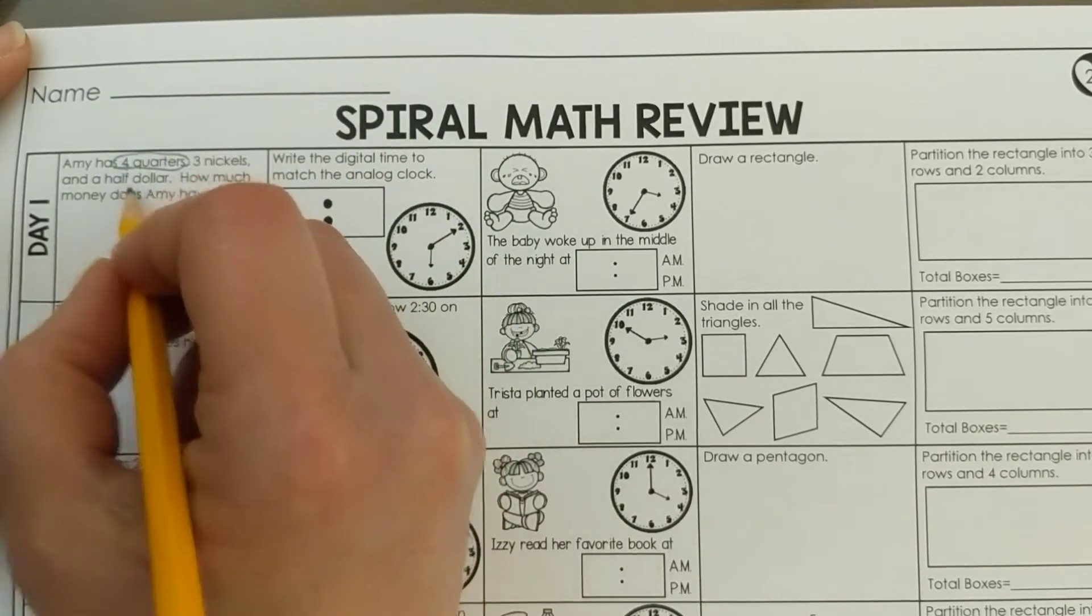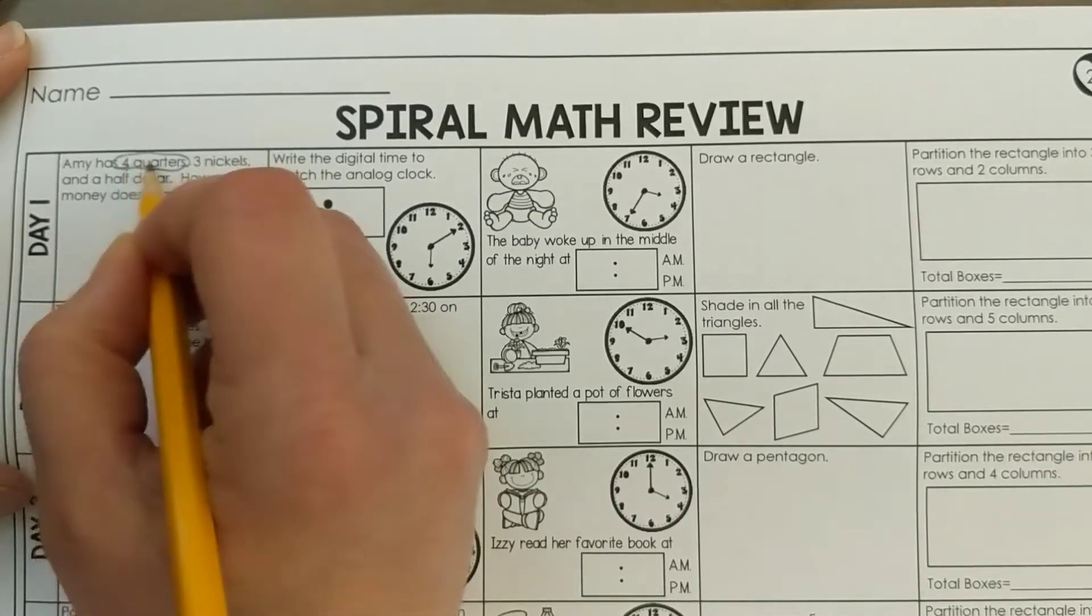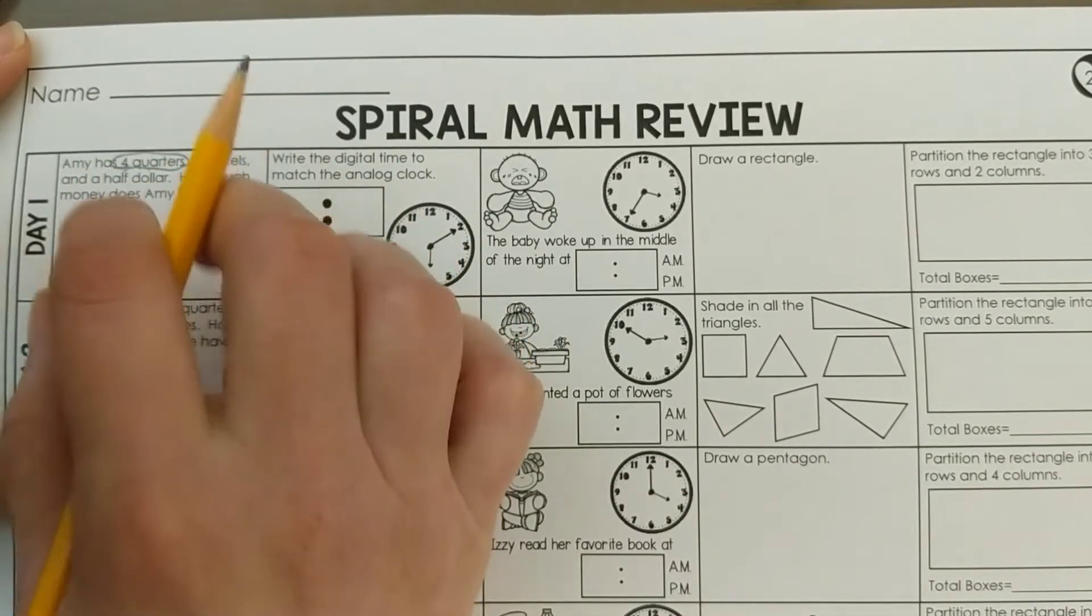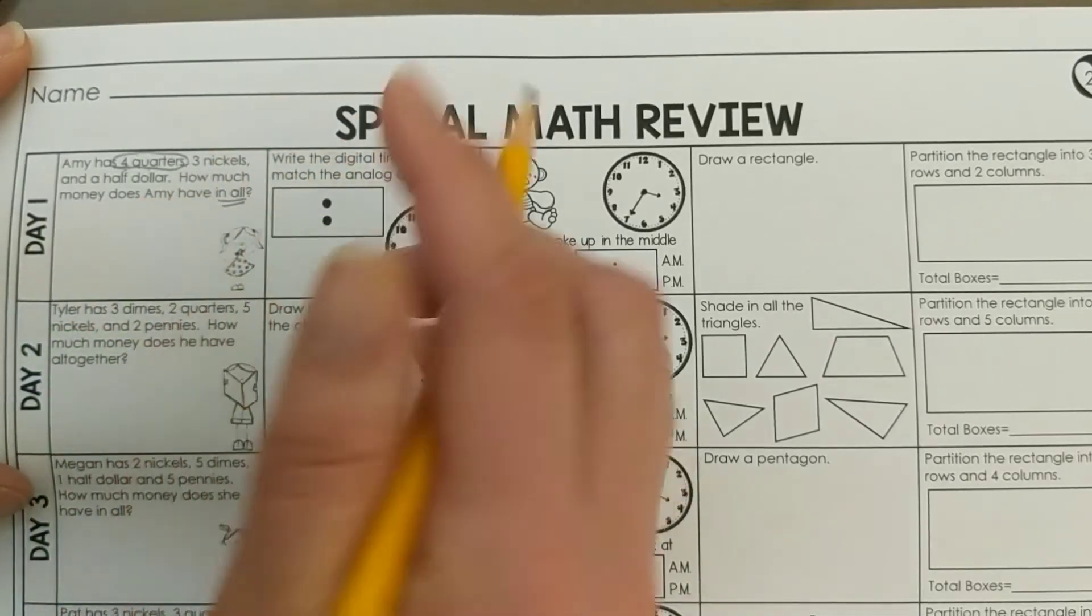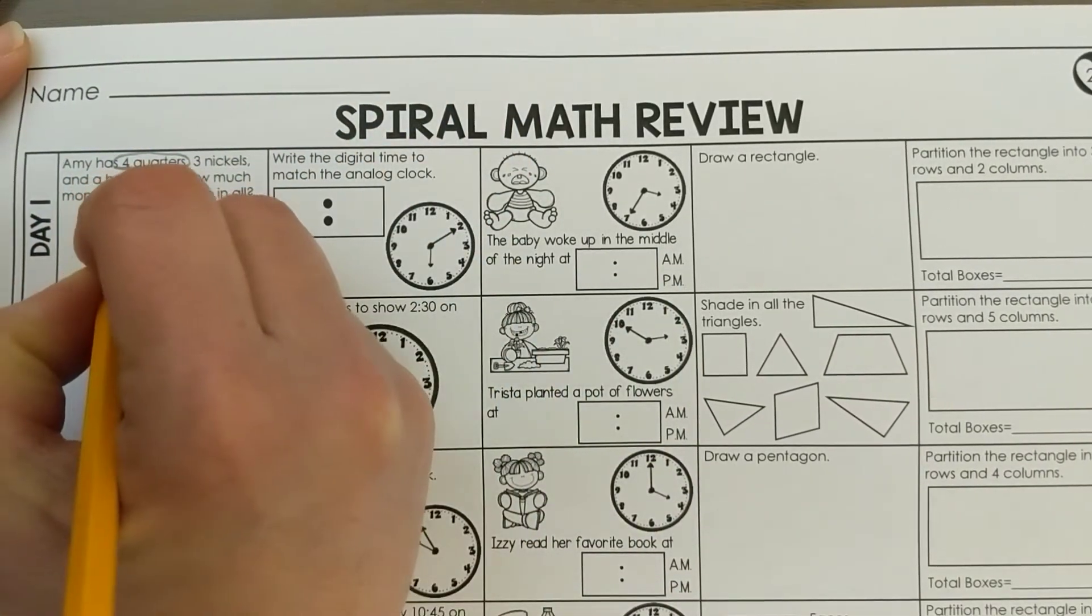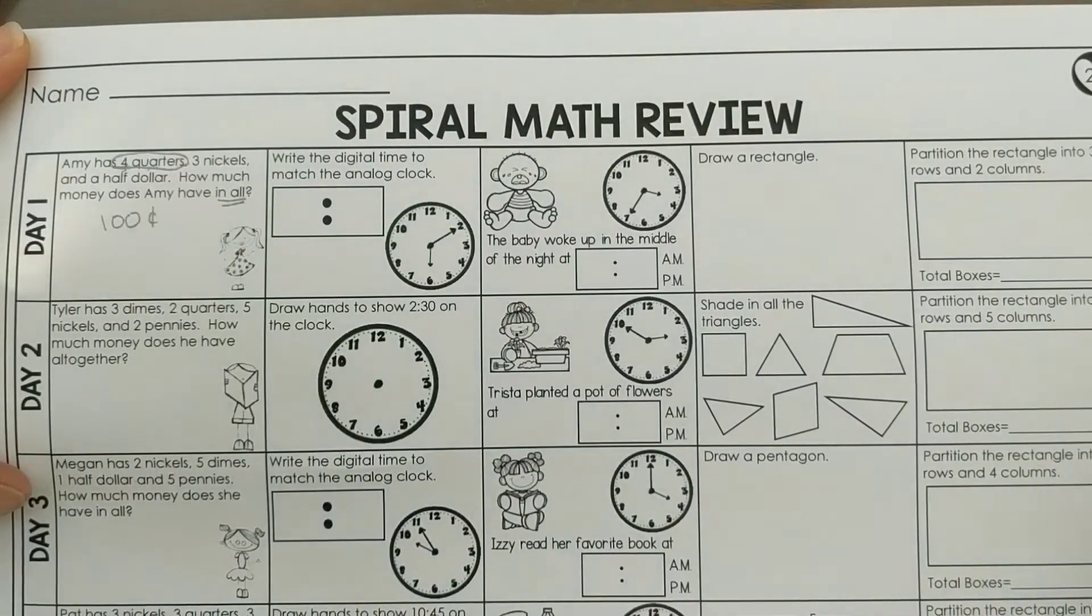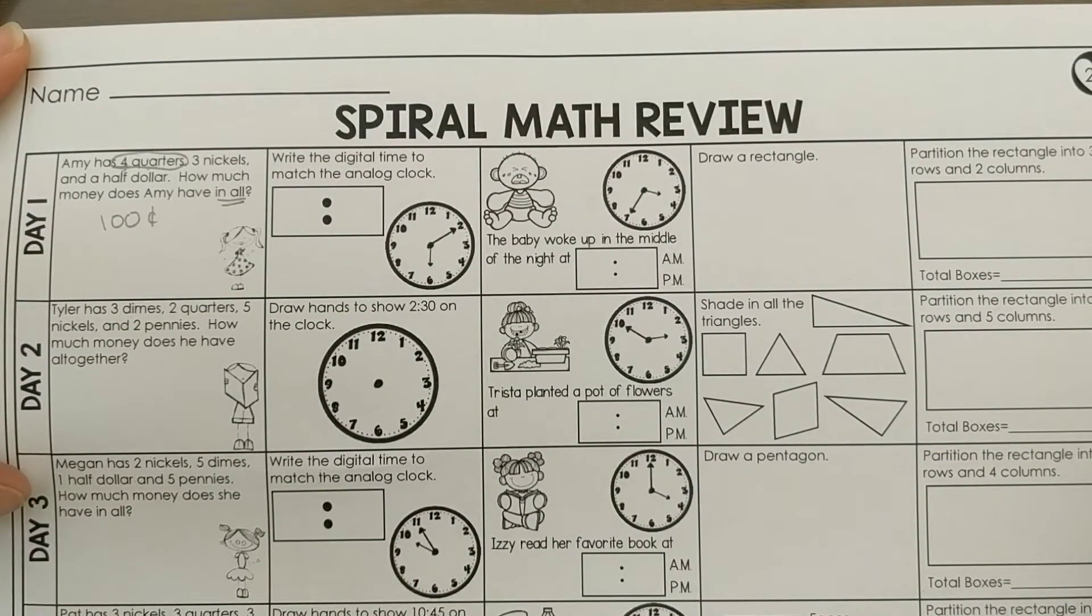If you forgot, you're going to take 25 and add it four times: 25, 50, 75, 100. But try to remember, four quarters automatically is one dollar. I'm going to write it as 100 cents since we're adding other money to it, and then we'll change it to dollars after.